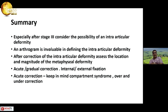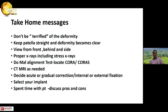In summary: especially after stage 3, consider the possibility of intra-articular deformity. An arthrogram is one of the most invaluable investigations to define the intra-articular deformity. After correction of the intra-articular deformity, assess the location and magnitude of the metaphyseal deformity. Decide on acute versus gradual correction, internal versus external fixation. For acute correction, keep in mind compartment syndrome, over-correction, and under-correction. Don't be terrified of a grotesque deformity — keep the patella straight and the deformity becomes clear. Clinically examine the patient, get proper x-rays, do malalignment tests, locate the CORA. Use CT or MRI if needed. Decide on your correction method and implant, and most importantly, spend time with the patient and the parents to discuss pros and cons.